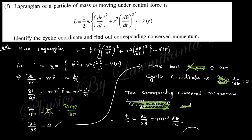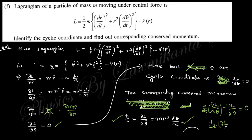The corresponding conserved momentum p_θ = ∂L/∂θ̇ = mr²θ̇ is conserved. From the Euler-Lagrange equation, d/dt(∂L/∂θ̇) - ∂L/∂θ = 0. Since ∂L/∂θ = 0, we get d/dt(∂L/∂θ̇) = 0, which means ∂L/∂θ̇ = constant. Therefore p_θ is the conserved momentum corresponding to the cyclic coordinate θ.